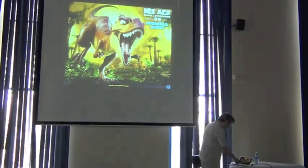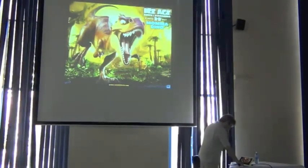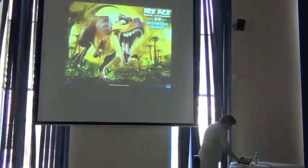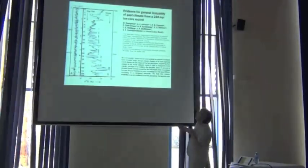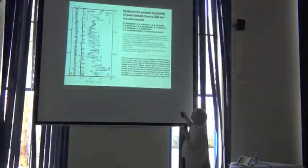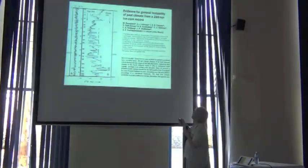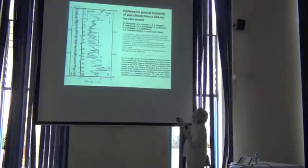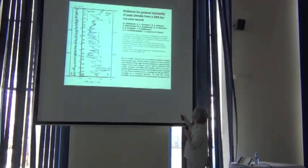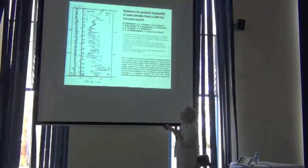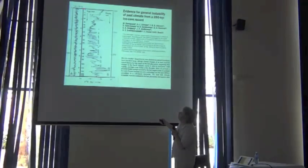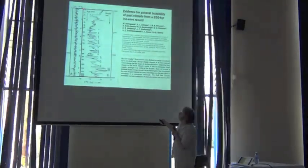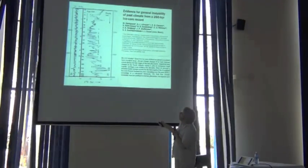Does that go back to the age of the dinosaurs? Well, Ice Age. But let's look at this. This is evidence for general instability of past climate from a 250,000 year ice core. And so, we're about 10,000 years back at the top of this. And then we go down.